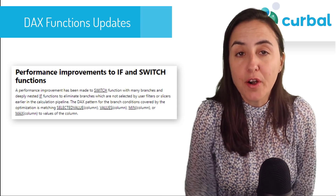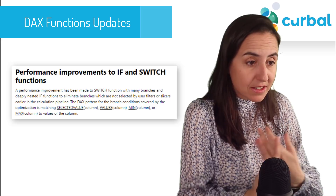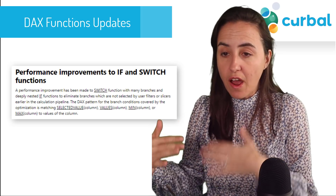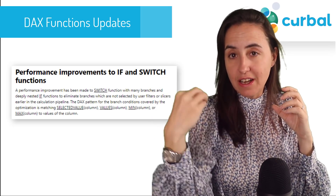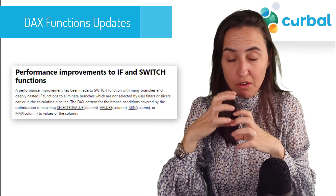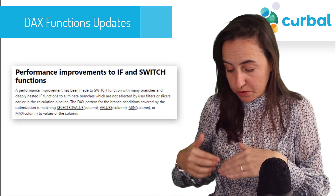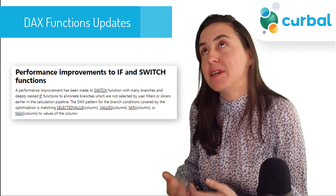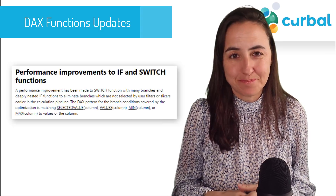The second DAX update is improved performance of both IF and SWITCH functions. My understanding is that if a user has, for example, a country slicer and clicks on a country, that slicer filter will be passed to the IF and SWITCH function first to minimize the data it has to go through, and then it will evaluate the IF conditions — so context filters are applied first, then the data scan. That should improve performance.